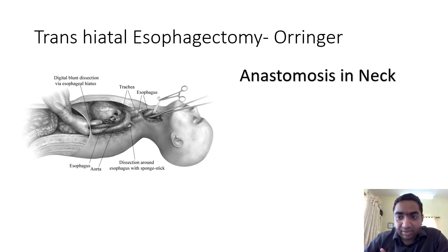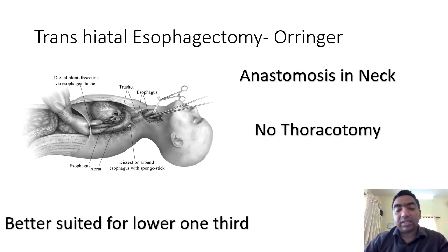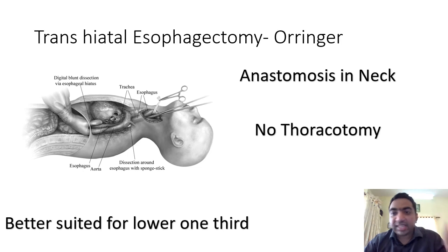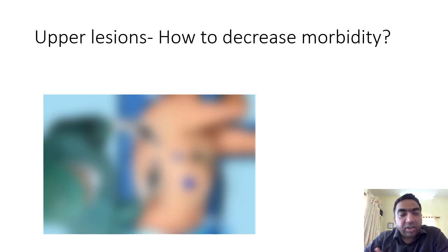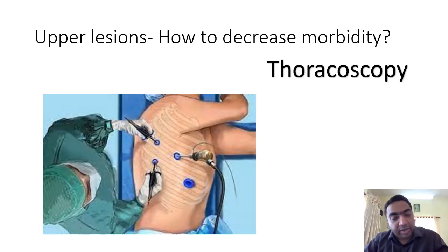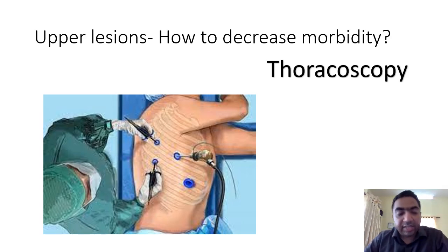The Orringer transhiatal esophagectomy has the advantage of no thoracotomy and cervical anastomosis, but it is only well suited for lower one-third tumors. For middle or upper esophageal tumors a thoracotomy provides better access since transhiatal dissection may not be complete. To reduce morbidity in mid and upper lesions, thoracoscopy can be used instead of open thoracotomy: make the stomach tube via abdominal incision, dissect the esophagus thoracoscopically, and perform a cervical anastomosis after pulling the esophagus toward the neck.